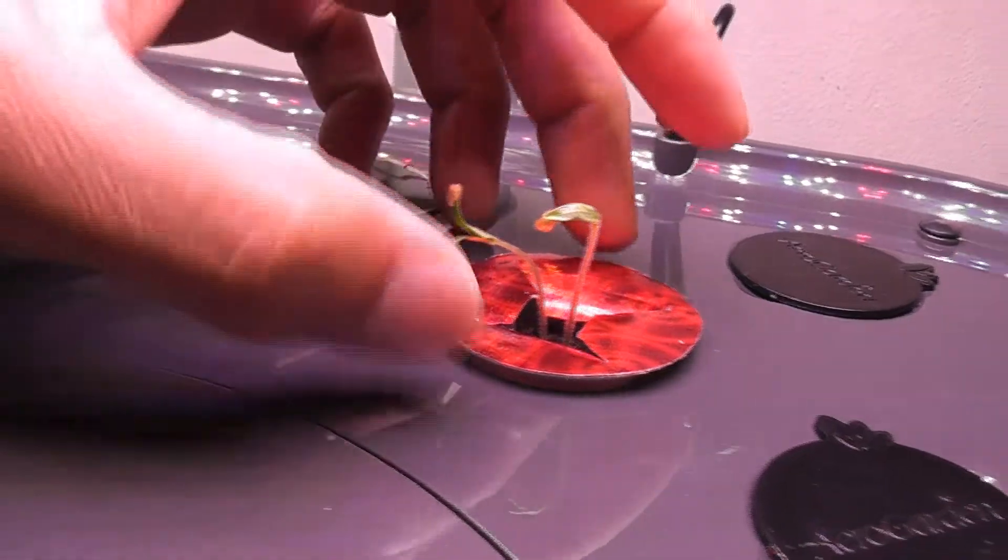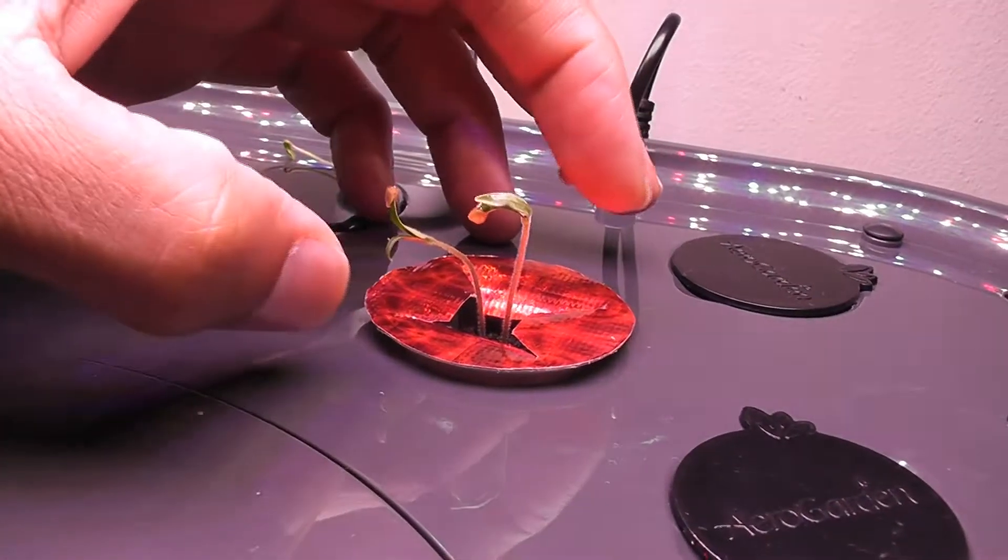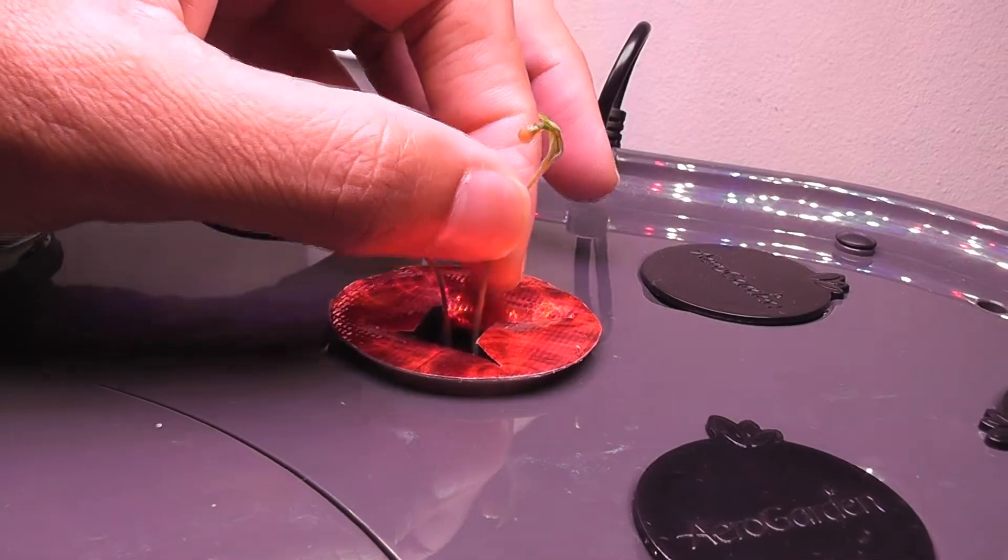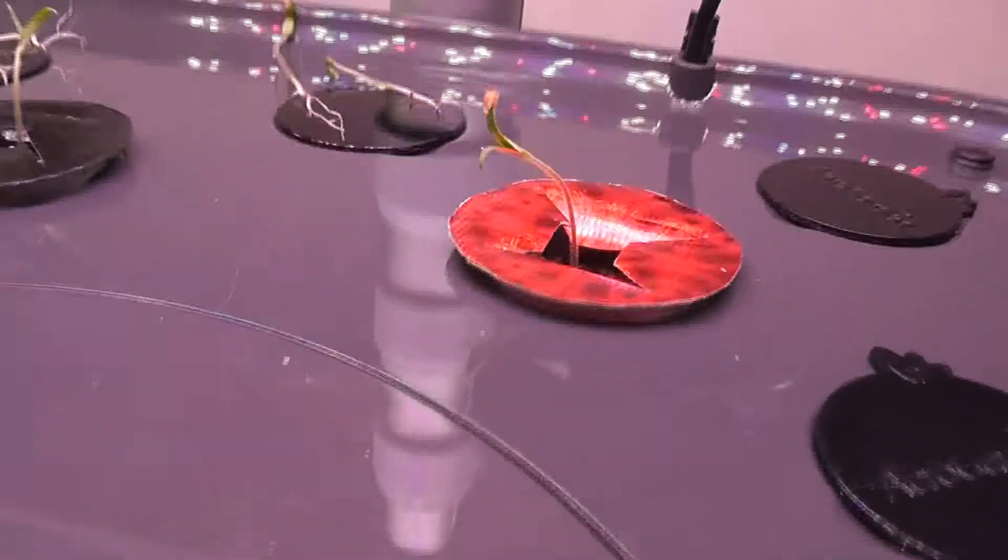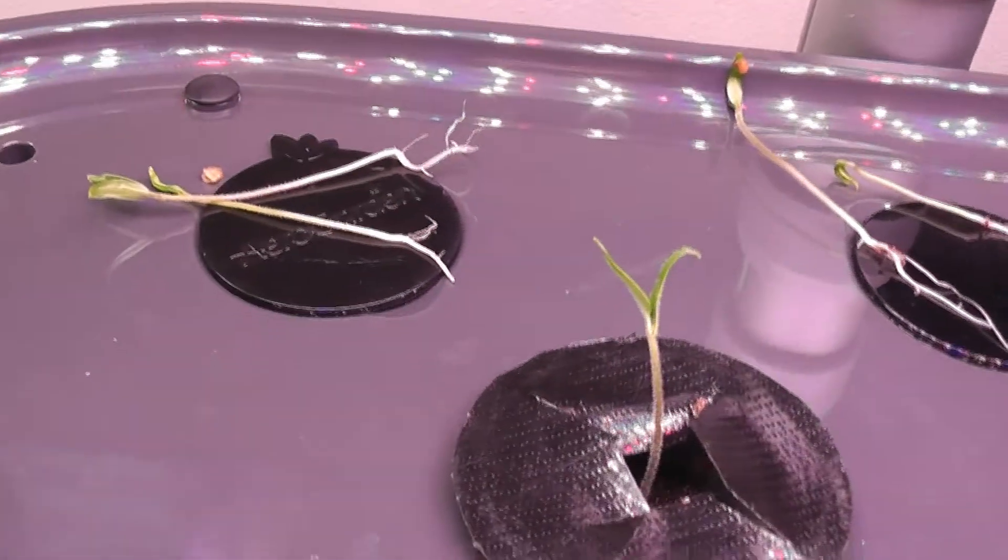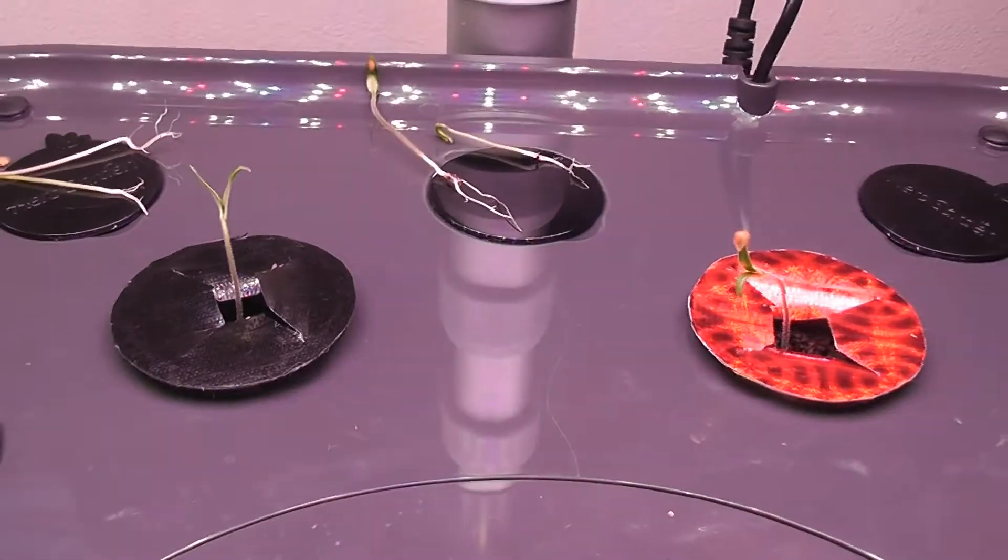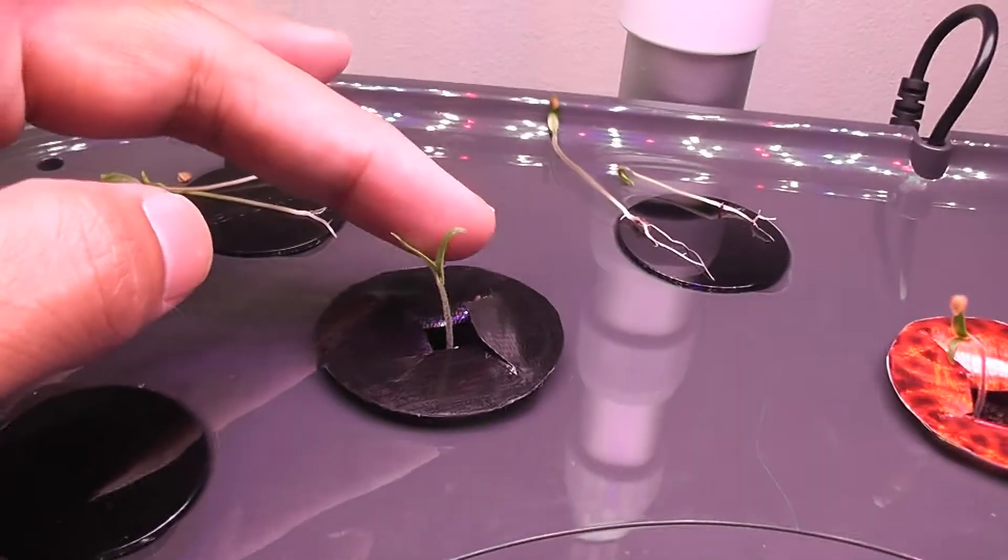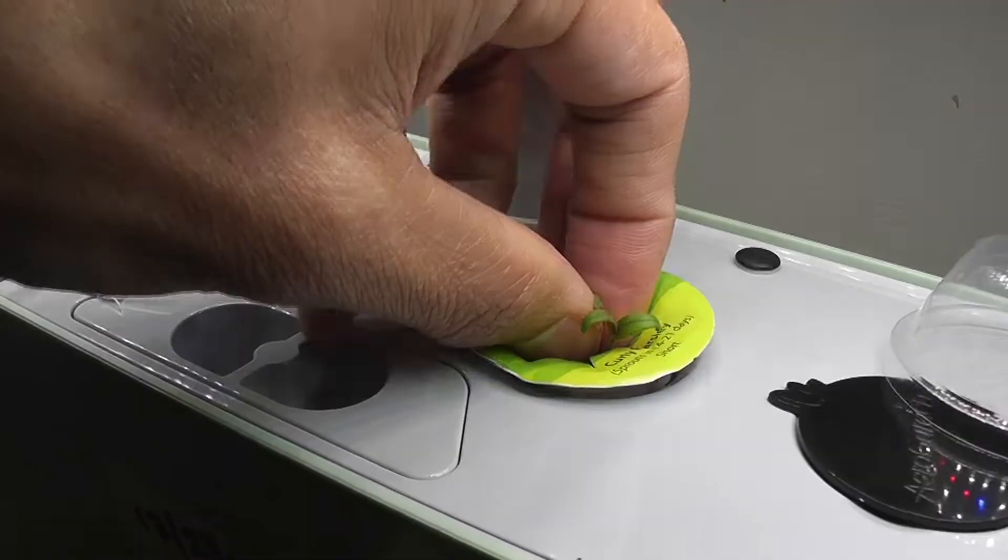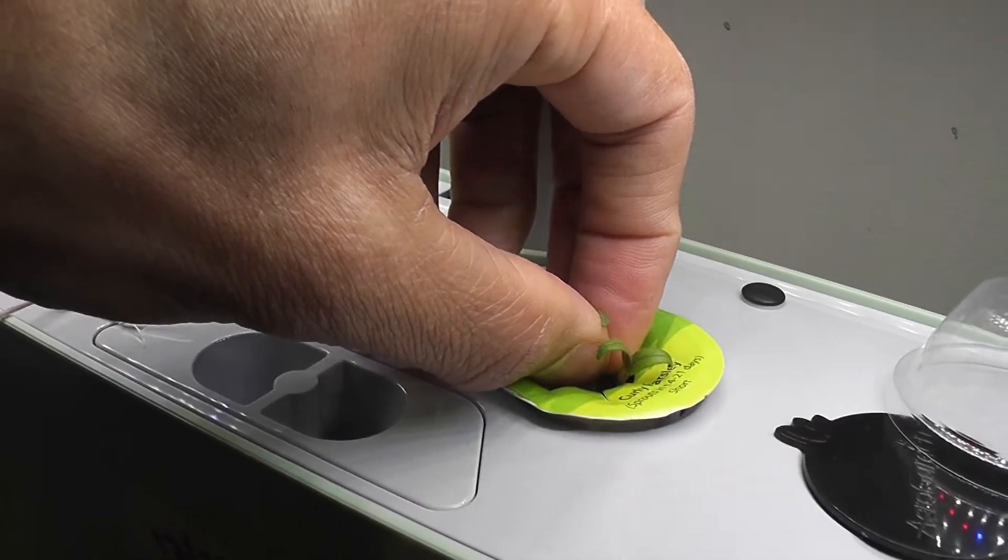They come off very nice and easy. If we wait any longer, it will become difficult to pull them out as the roots spread deep into the sponge. Even if you are able to pull them out, there will be some dead roots left in the bowl which may cause issues later on.